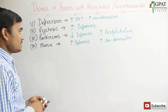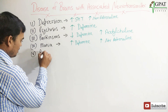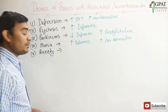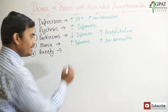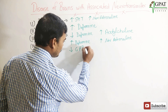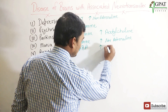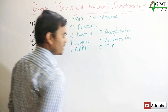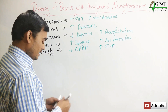Next disease is anxiety. In anxiety, your GABA neurotransmitter decreases — meaning decreased GABA level and increased 5-HT level. So serotonin level increases and GABA level decreases.